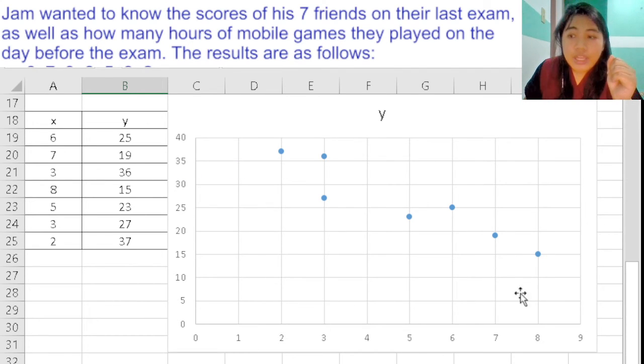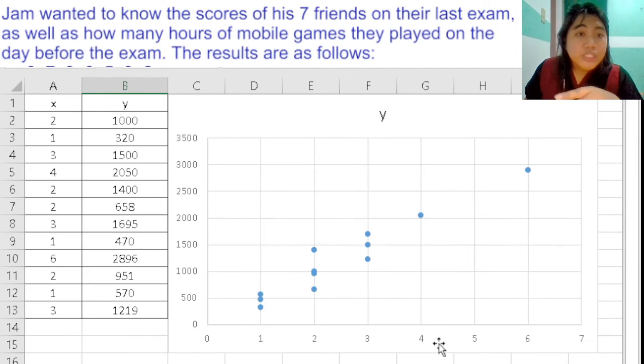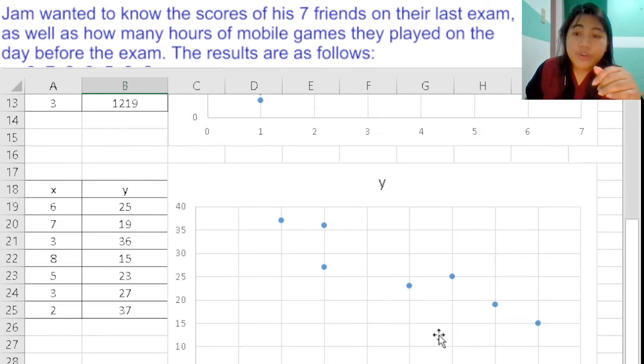And y, our dependent variable, being the scores in their last exam, showing a negative correlation. In terms of variation, this is a moderate negative correlation. The first one was a strong positive correlation.